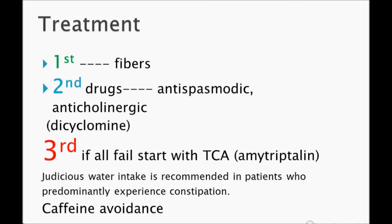The next step is tricyclic antidepressants — TCAs — specifically amitriptyline, which is very important. Amitriptyline acts as an antispasmodic, anticholinergic, and pain modulator through other mechanisms as well. So the treatment steps are: first fiber, then antispasmodics and anticholinergics, and third TCAs. You should also encourage increased water intake and advise caffeine avoidance, since caffeine can worsen anxiety, which these patients often have.